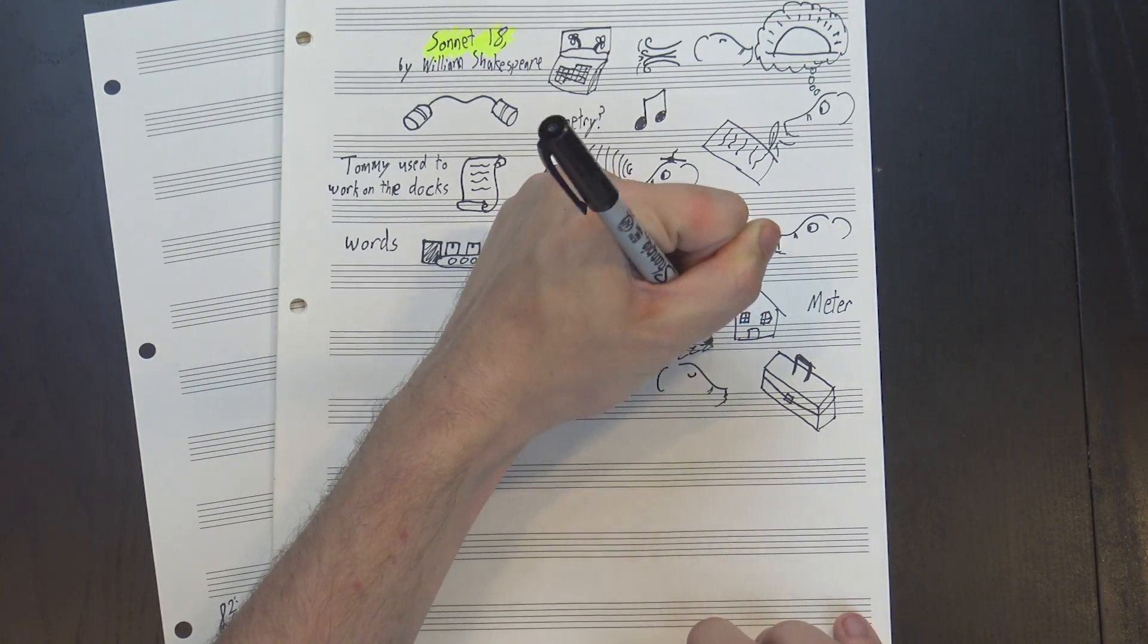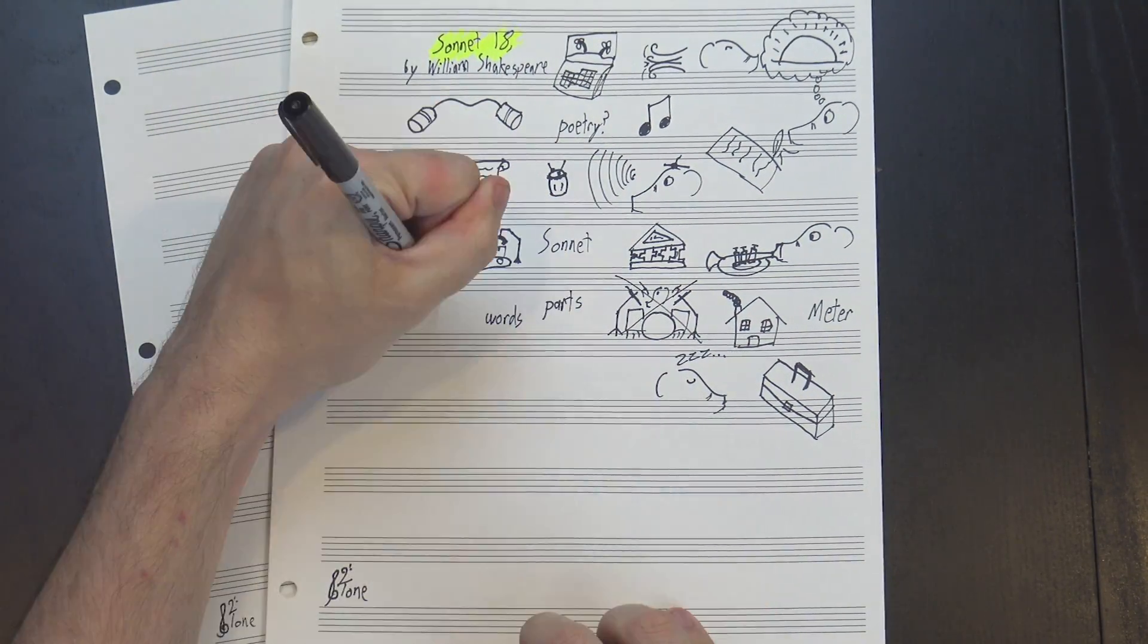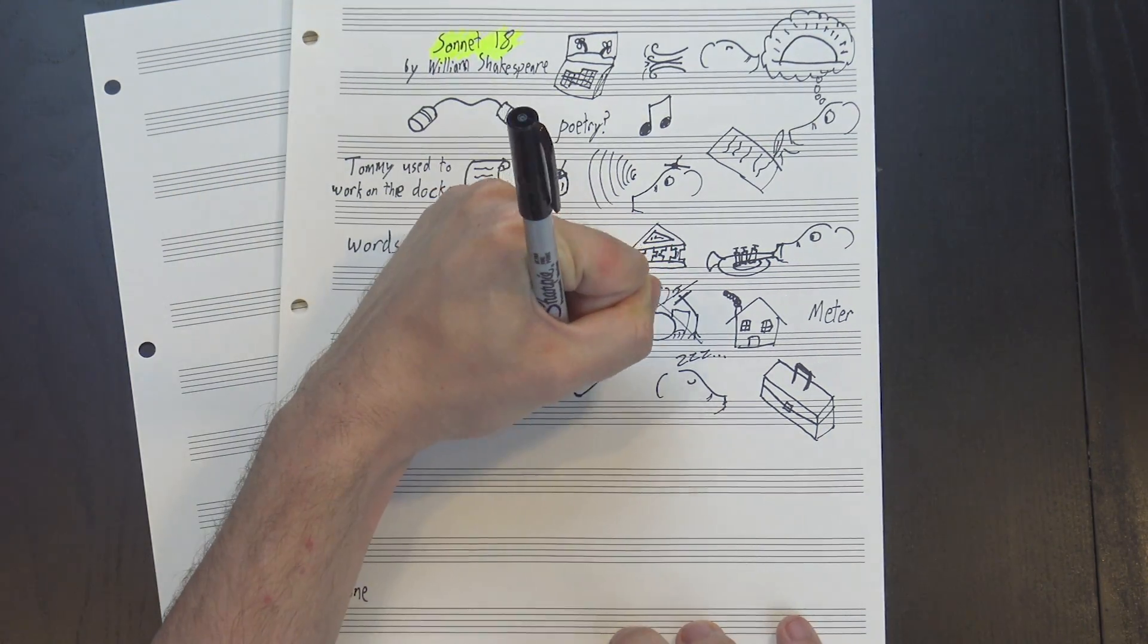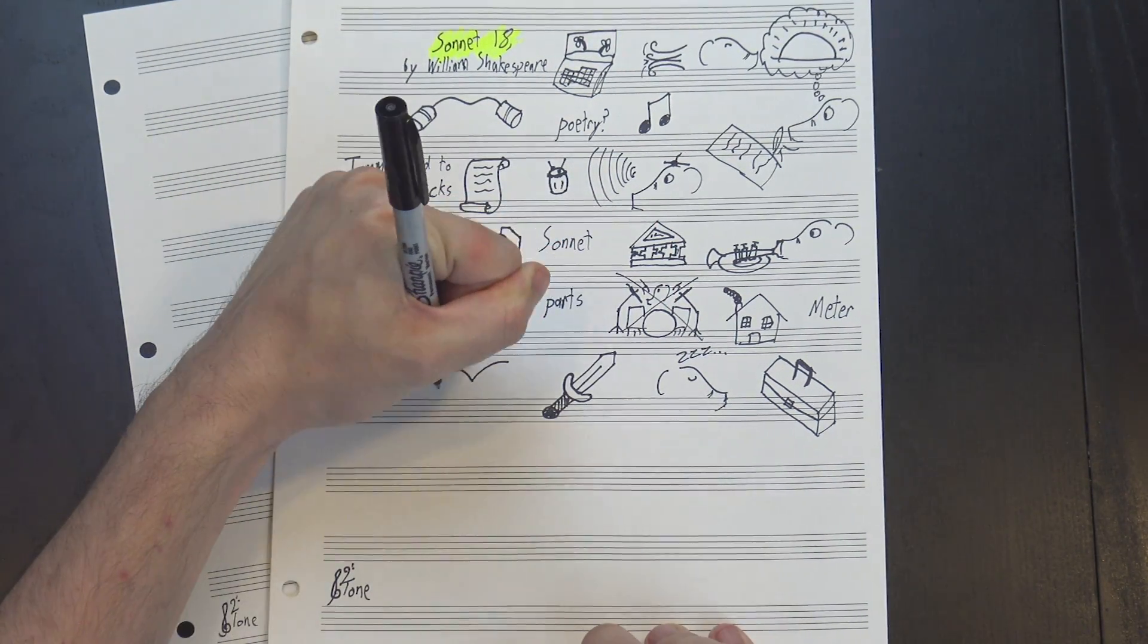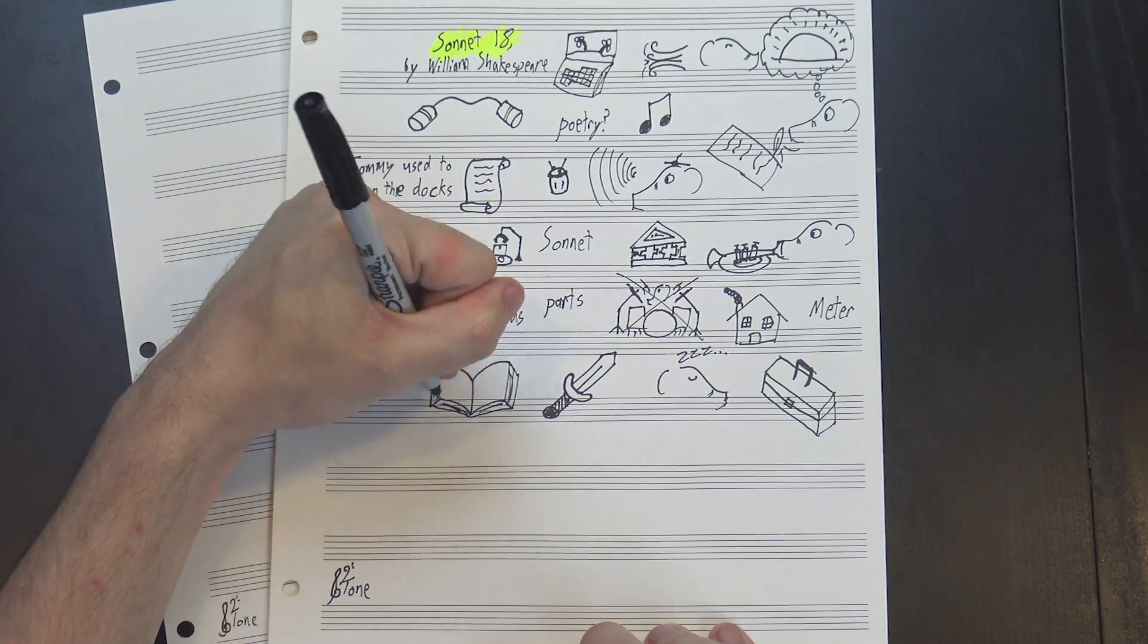Humans don't naturally speak in monotone. We accent certain parts of the words we're saying, like I just did with parts, words, and say. Poets weaponize this natural tendency, carefully arranging their words so that rhythms appear just by reading them out loud.